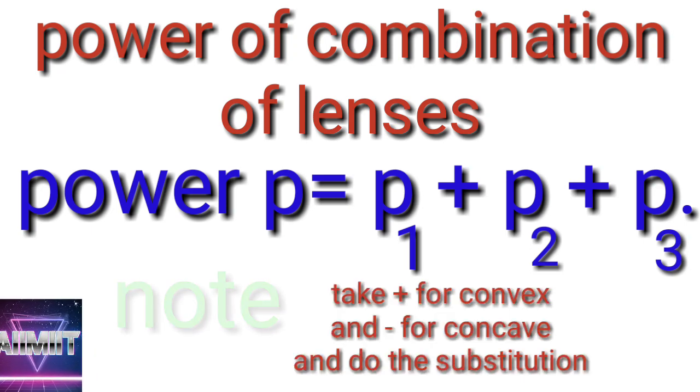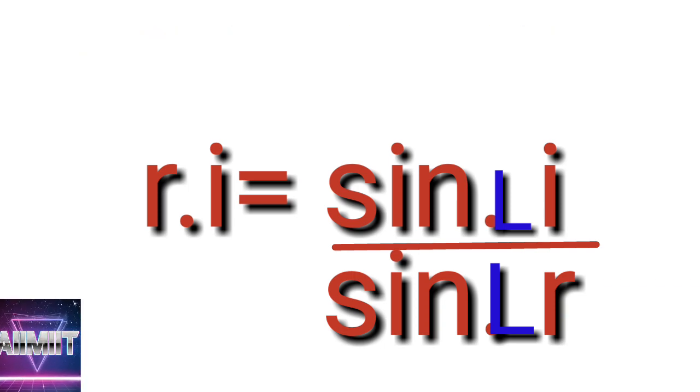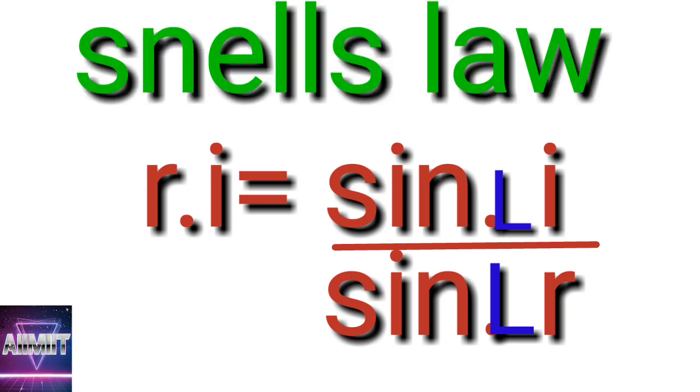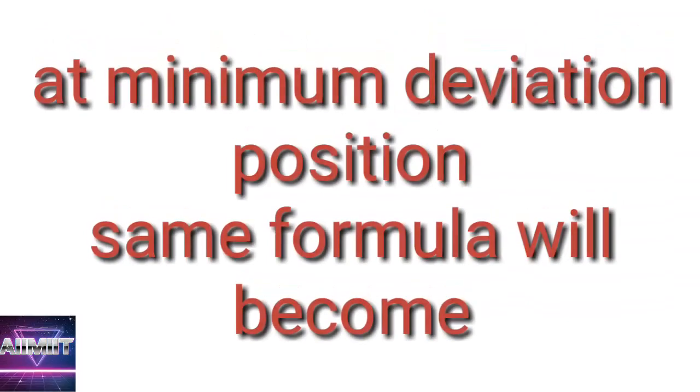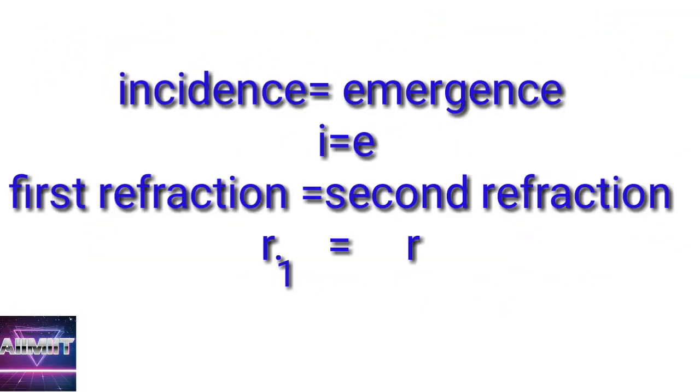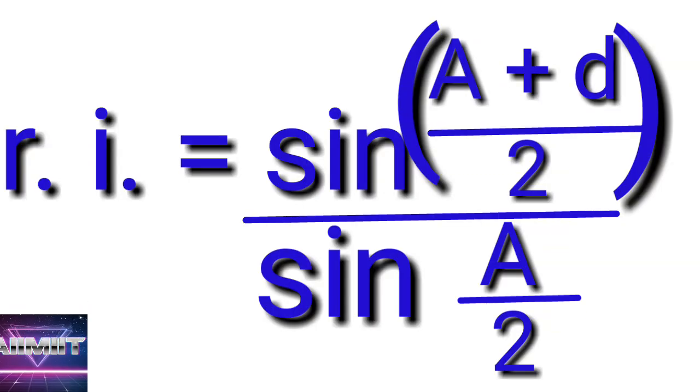Power of combination of lenses is P = P1 + P2 + P3. You can extend it to any number of powers given. Number 18: Snell's law - refractive index equals sine of angle of incidence by sine of angle of refraction. At minimum deviation, the same formula becomes μ = sin((A+D)/2) / sin(A/2) because at minimum deviation, angle of incidence equals angle of emergence and first refraction equals second refraction.